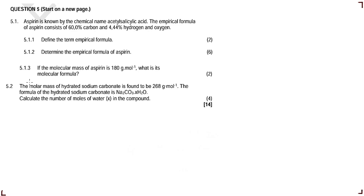We are given aspirin, LAGO 5.1, which is known by the chemical name acetylsalicylic acid — it's a tongue twister. The empirical formula of aspirin consists of 60% carbon, 4.44% hydrogen, and oxygen — we are not assigned a percentage for the oxygen. So LAGO 5.1 wants us to define the term empirical formula.